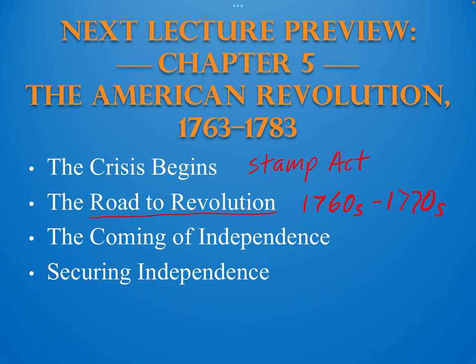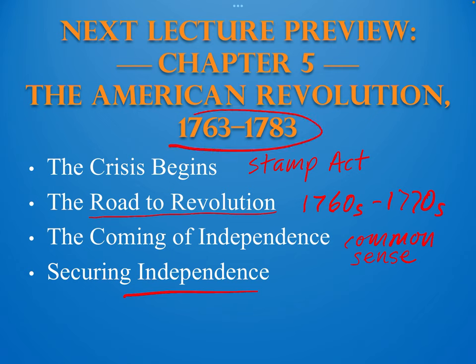Then comes what Foner calls the coming of independence — key events marking the move toward independence. We'll learn about things like Common Sense, a pamphlet distributed by Thomas Paine, and finally how the American colonists were able to fight and win the Revolutionary War against the British Navy, the strongest naval power on earth at the time, between 1763 and 1783. This is the content of Chapter 5: a preview of the American Revolutionary War.